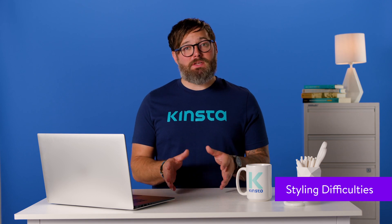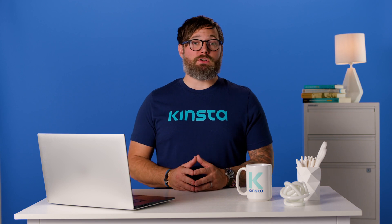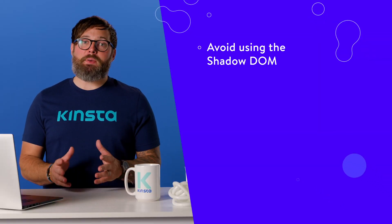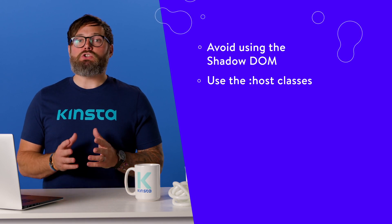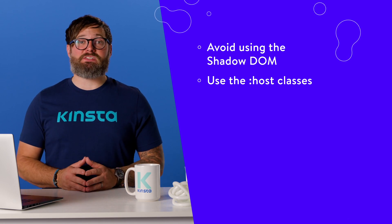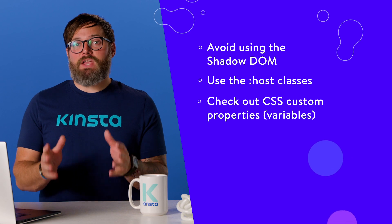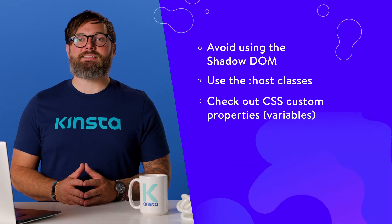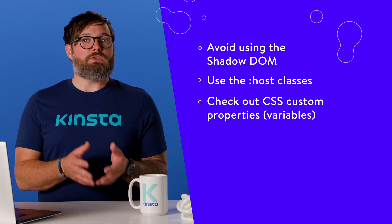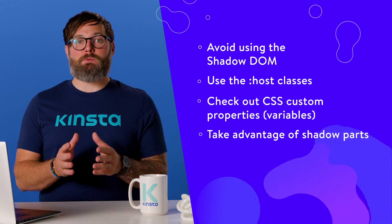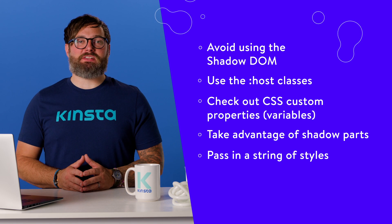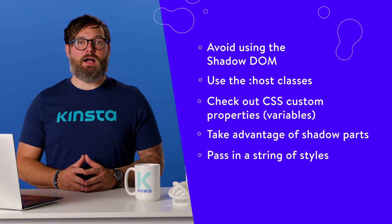Web components have improved significantly, but some aspects can be tricky to manage. Styling web components poses challenges, especially if you want to override scoped styles. There are several solutions: one, avoid using the shadow DOM and append content directly to your custom element, though other JavaScript could accidentally modify it. Two, use :host classes — scoped CSS can apply specific styles when a class is applied to the custom element. Three, use CSS custom properties — custom properties cascade into web components, so if your element uses var(--myColor), you can set it in an outer container. Four, take advantage of shadow parts — the ::part selector can style an inner component that has a part attribute. Five, pass in a string of styles as an attribute to apply within a style block. None of these solutions are ideal, so you'll need to plan carefully how others can customize your web component.